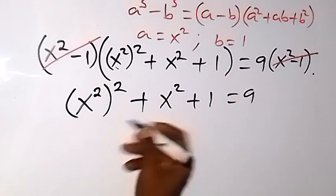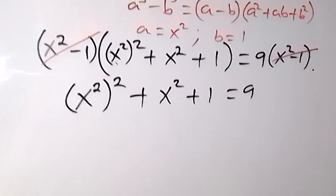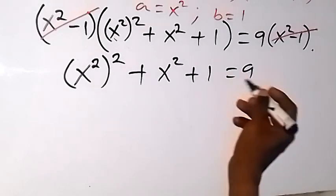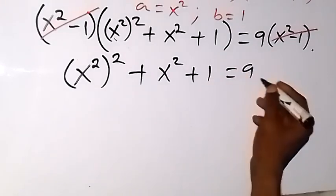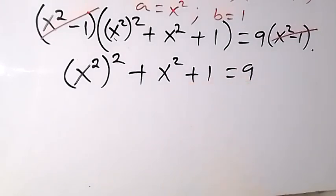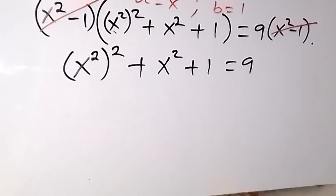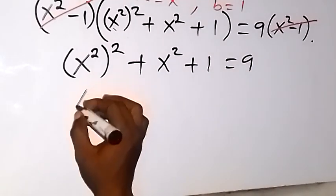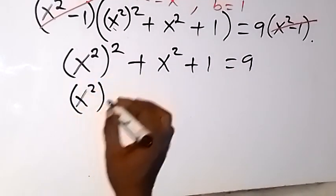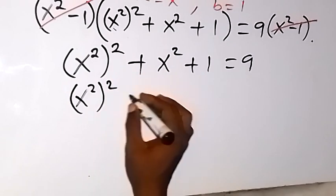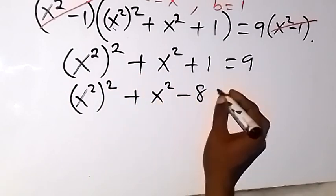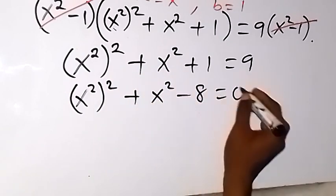And when we bring 9 to this side, that will be minus 9, because plus 9 becomes minus. So it equals 0. We have x raised to power 4 plus x squared minus 8 equals 0.